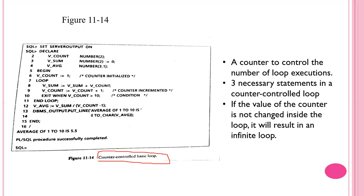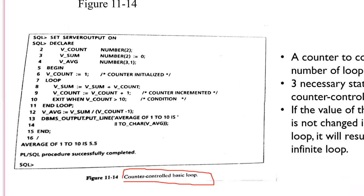You use a counter to control the number of loop executions, declared in the declaration part as v_count. Other variables are also declared in the declaration section. In the begin section, the variable count is initialized to one. You sum with the counter — sum plus count — and increment the counter. The condition EXIT WHEN v_count is greater than 10 terminates the loop. This program finds the average of numbers from one to ten, which is 5.5, calculated using the basic loop.